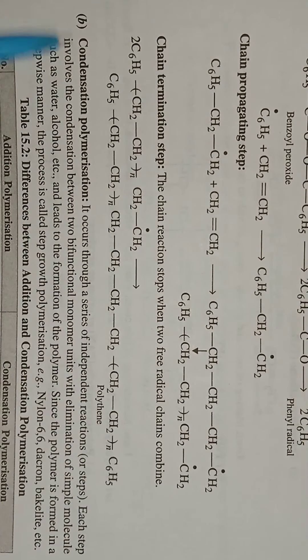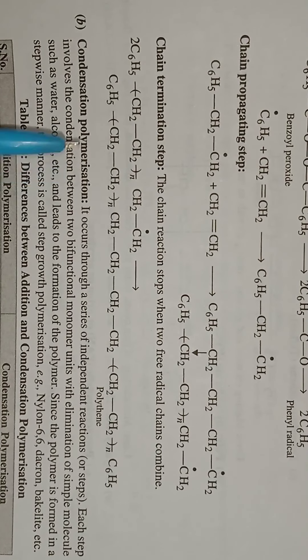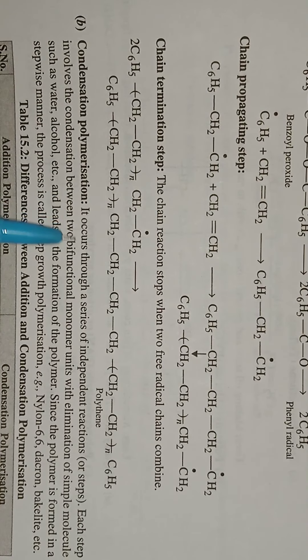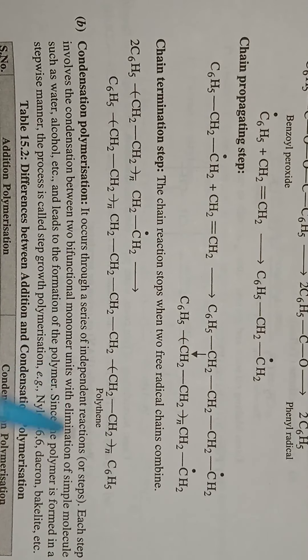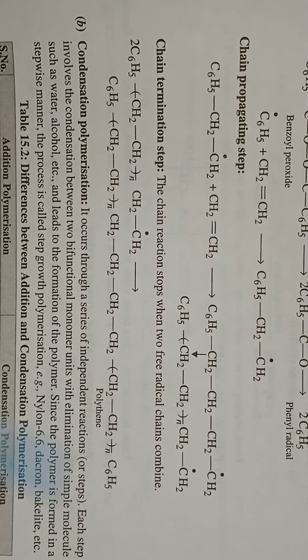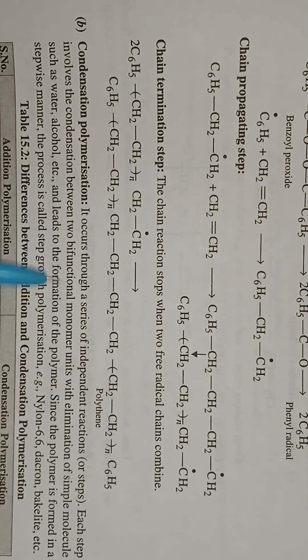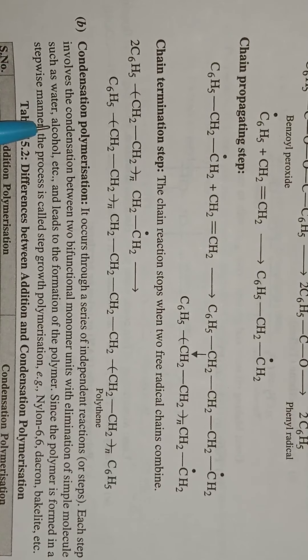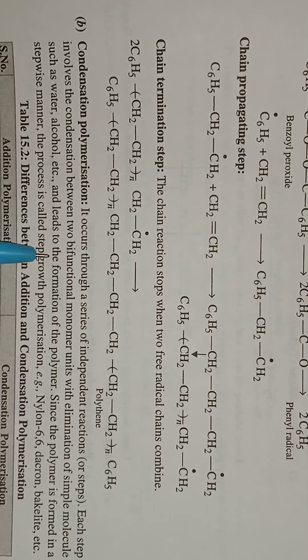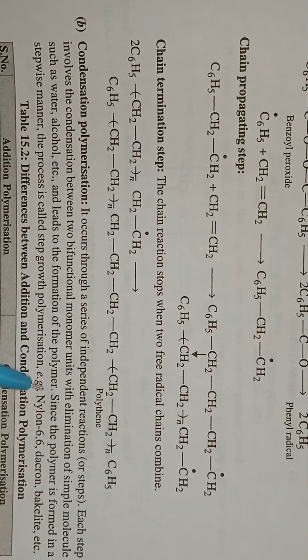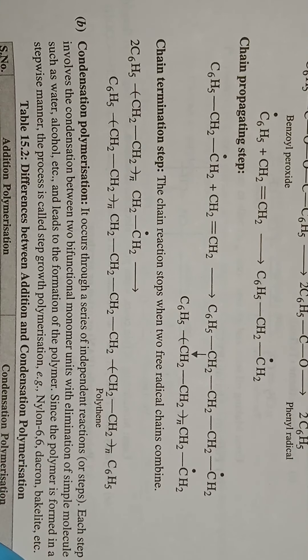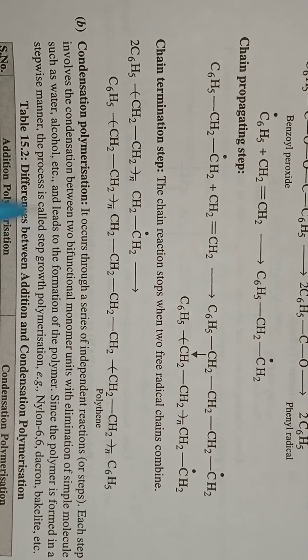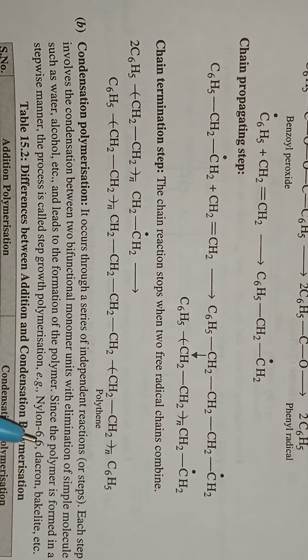Next is condensation polymerization. Condensation polymerization occurs through a series of independent reactions or steps. Each step involves the condensation between two bifunctional monomer units with the elimination of simple molecules such as water, alcohol, etc., leading to the formation of the polymer. Because the polymer is formed in a step-wise manner, it is also called step-growth polymerization.